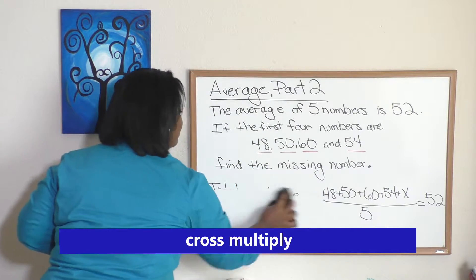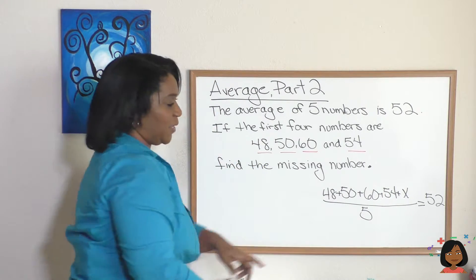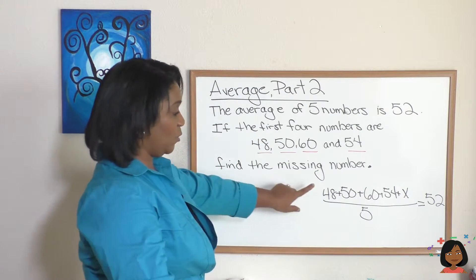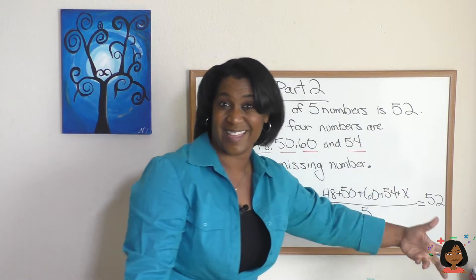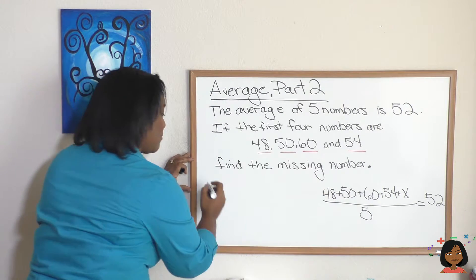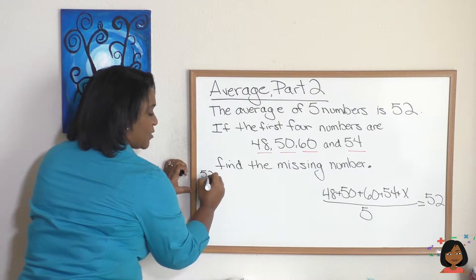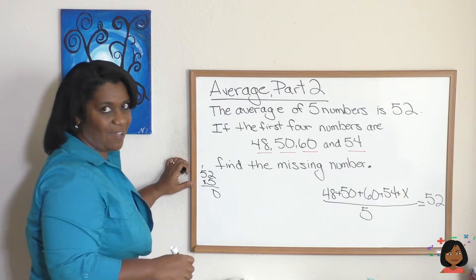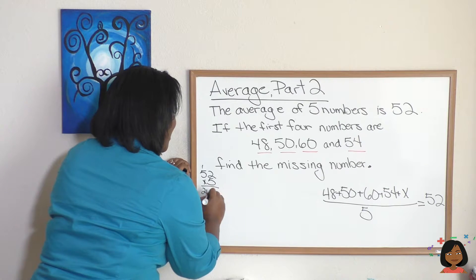So now that you've seen this, I'm going to erase it so we can do the math. We're going to multiply five times 52 and set it equal to this plus this plus this plus this, and then we solve for x. So here we go. Five times 52, let's do the math over to the side. Five times two is ten, five times five is 25 and one is 26.